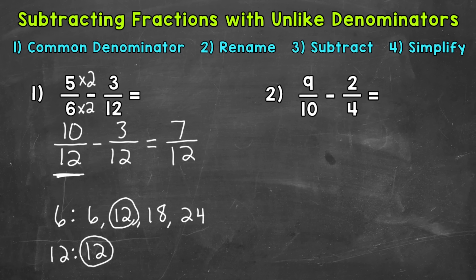Always look to simplify. Can we simplify 7 twelfths? Well, 7 twelfths is in simplest form — the only common factor between 7 and 12 is 1, so we can't break this down any further. Our final simplified answer is 7 twelfths.